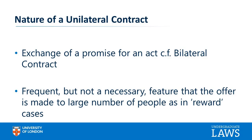A frequent feature of unilateral contracts is that the offer is made to many people. In the classic example of a reward case — of which Carlill is a type — if I've lost property and offer a reward for its return, I want to motivate as many people as possible to look for it, giving maximum publicity to my offer. But publication to many people is a frequent, not a necessary, feature of a unilateral contract.